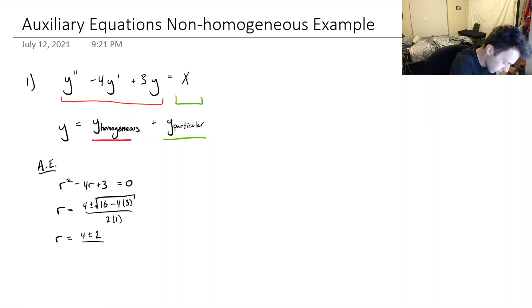So R is going to be either 6 over 2, so 3, or it will be 2 over 2, which is 1.